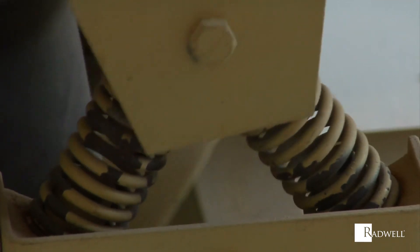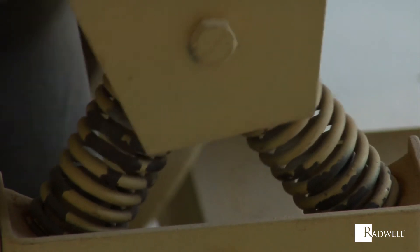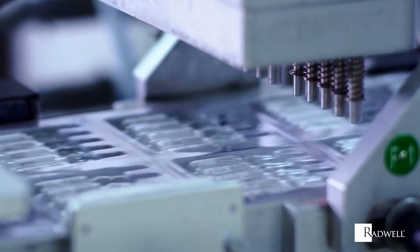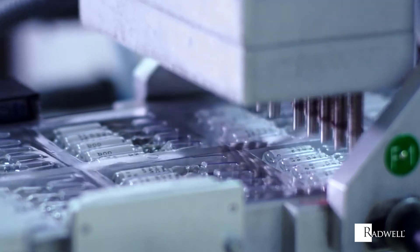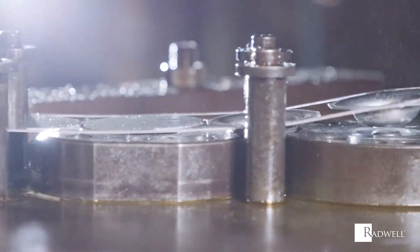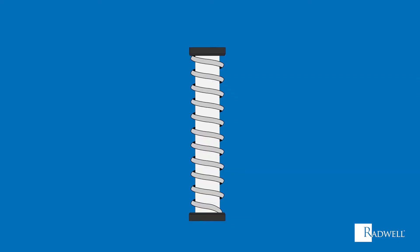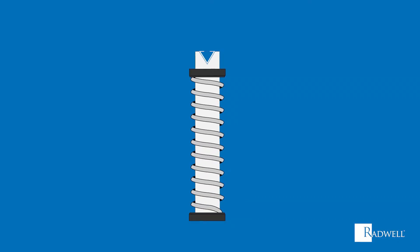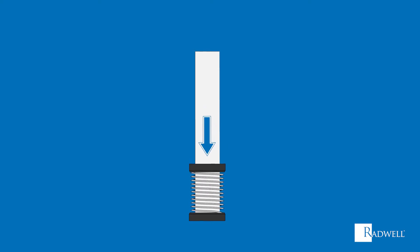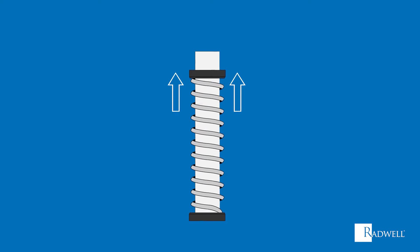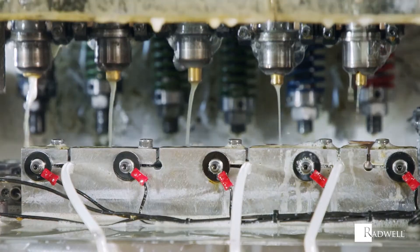A compression spring is an open coil helical wire wound or constructed to oppose a force when compressed. These coil springs can work independently or they can be assembled over a guide rod or fitted inside of a hole. Compression springs operate starting with a force being applied to them. This force causes the spring to compress and store energy. The spring will try to return to its original length, releasing the energy it has stored and pushes back against the force.